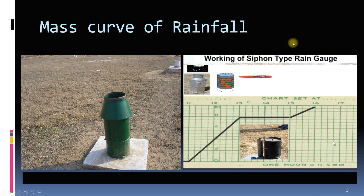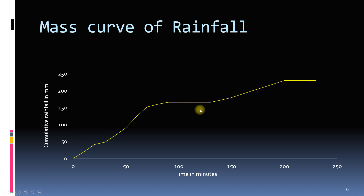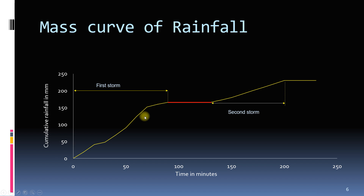Let us discuss the mass curve in detail. Here, time is on the x-axis and cumulative rainfall in millimetres is on the y-axis. The curve rises at the start and then becomes parallel to the x-axis, indicating that the cumulative rainfall is not increasing, which implies the rain has stopped. After this red part, the curve starts rising again, indicating that rain has started. The curve before the red part represents the first storm and the curve after the red part represents the second storm.